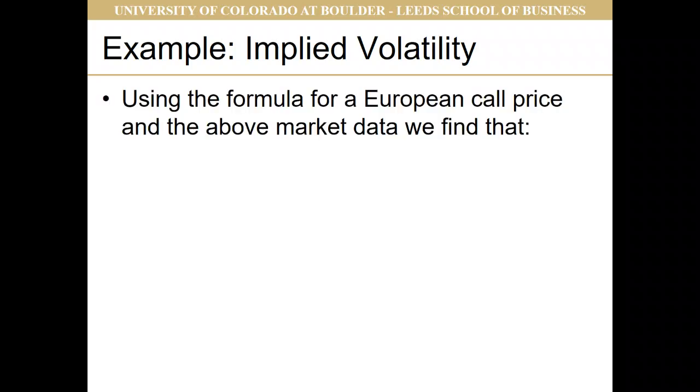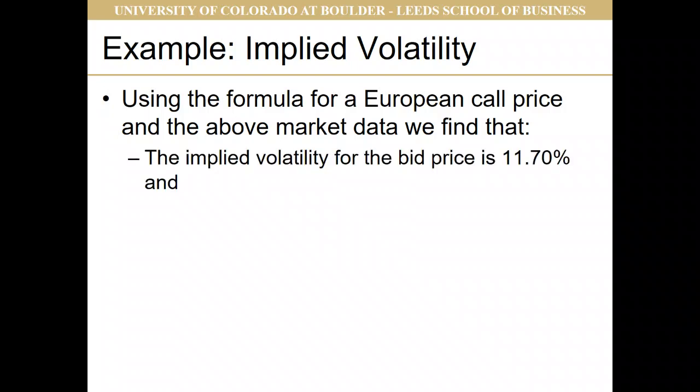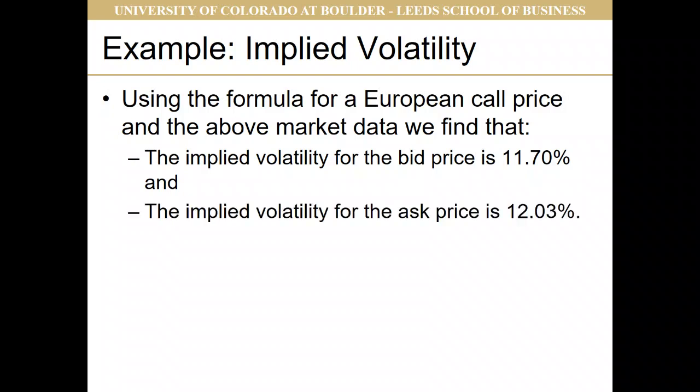Using the formula for the European call price and the market data we have, including the observed option prices, we find that the implied volatility for the bid price was 11.7%, and the implied volatility for the ask price was 12.03%. The fair price is somewhere in between, so the fair implied volatility for this option is somewhere between 11.7% and 12.03%.